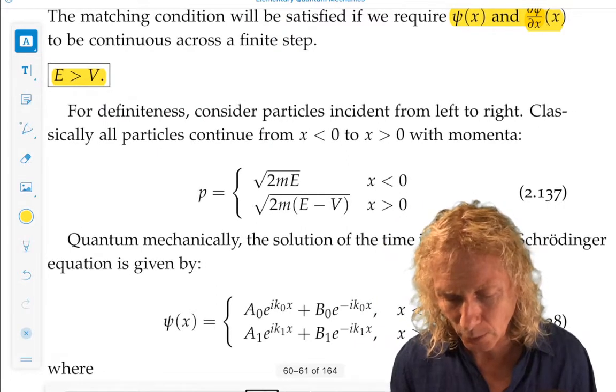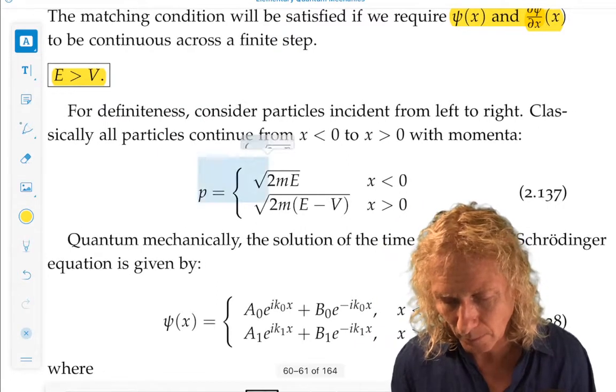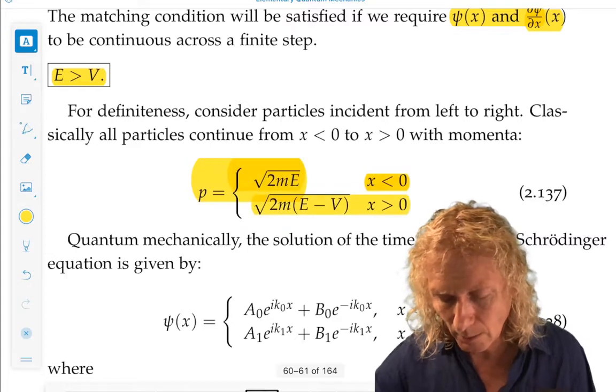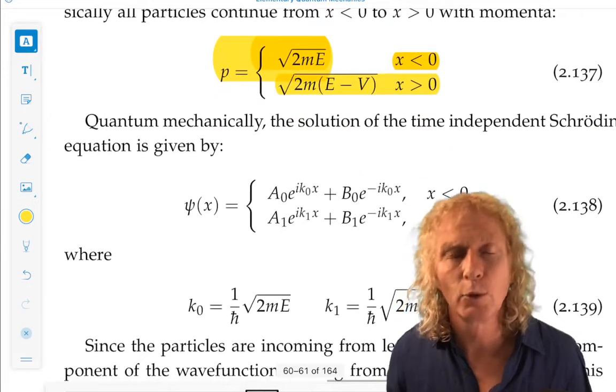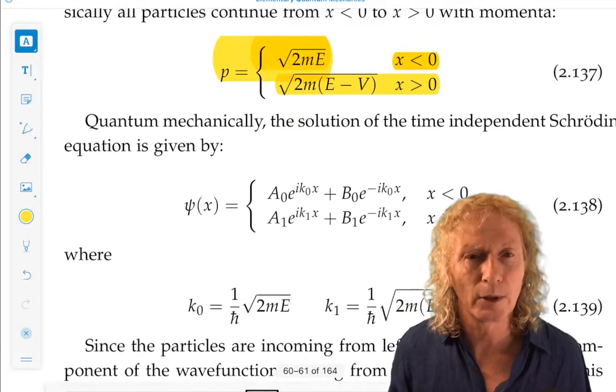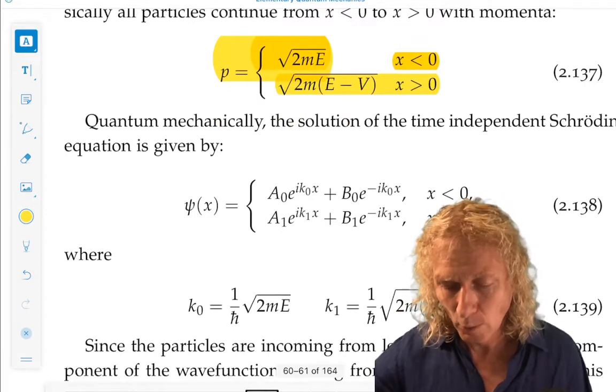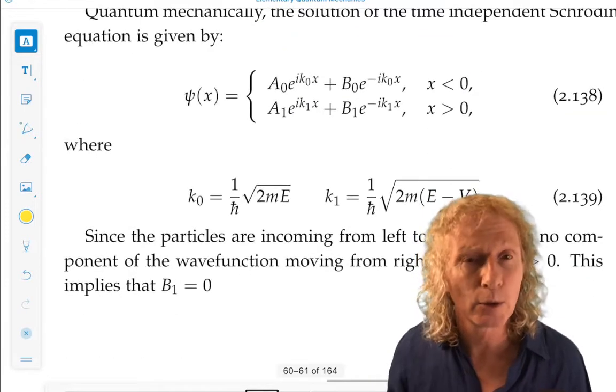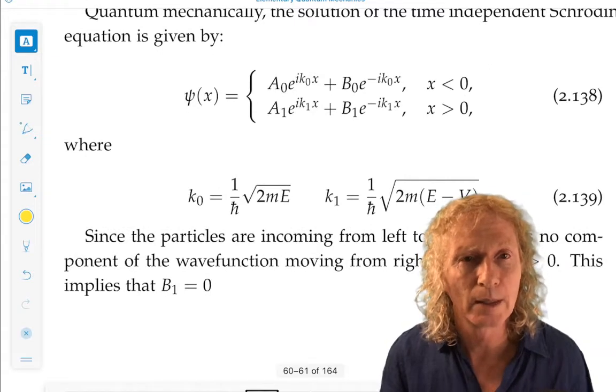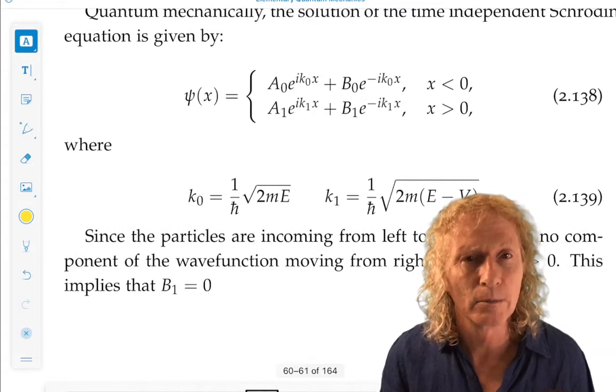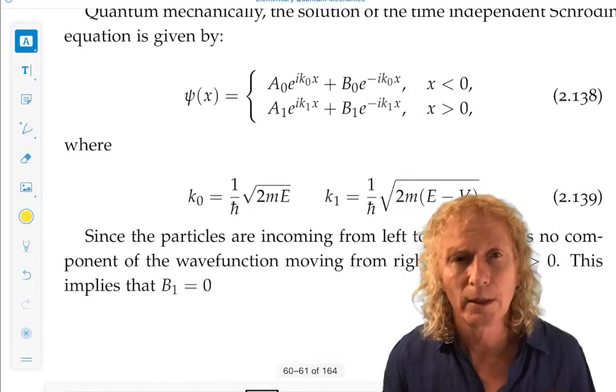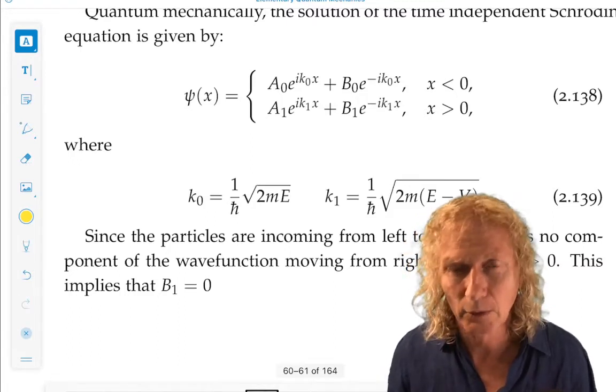So, the momentum in the two cases given by this. Now, the strategy we're going to use is we have two regions. x less than zero, x greater than zero. We're going to write down the general form that the wave function should have in those two regions, take into account physical considerations.